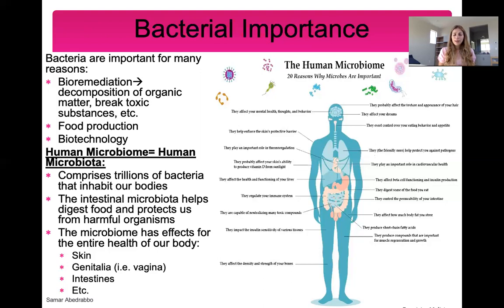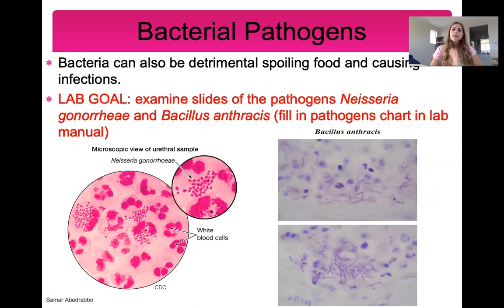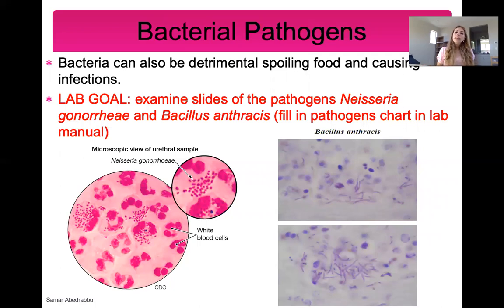From this section, know the four beneficial aspects of bacteria: bioremediation, food production, biotechnology, and the human microbiota. Now we'll focus on bacterial pathogens, which is what this lab is about. Remember, a pathogen is anything that causes disease. Bacteria can be bad because they're pathogenic and because they cause food to spoil. In lab, the goal was to look at slides of two pathogens — Neisseria gonorrhoeae and Bacillus anthracis — both of which cause very serious, somewhat common diseases.